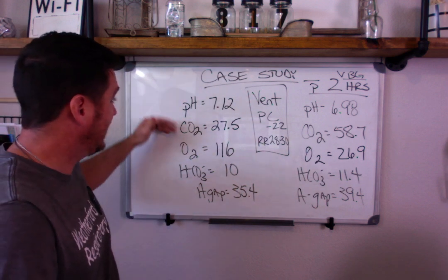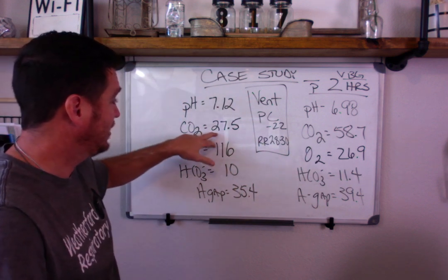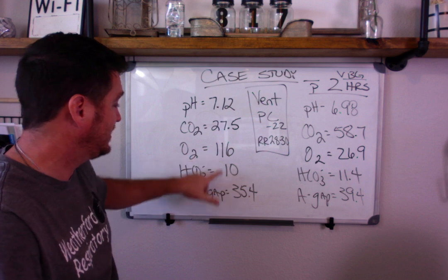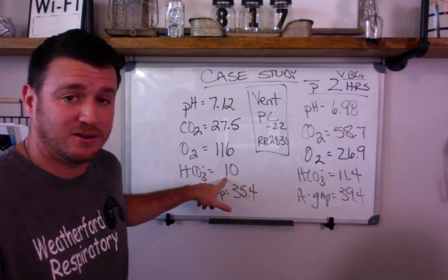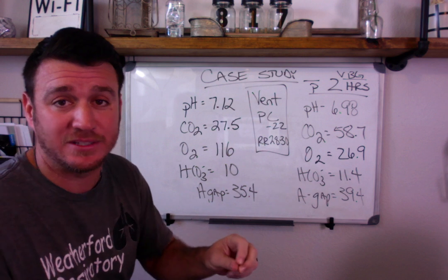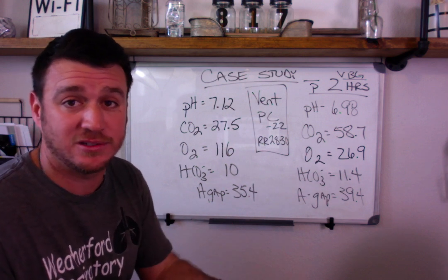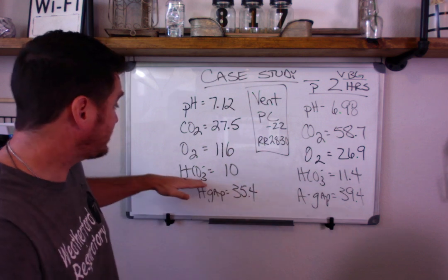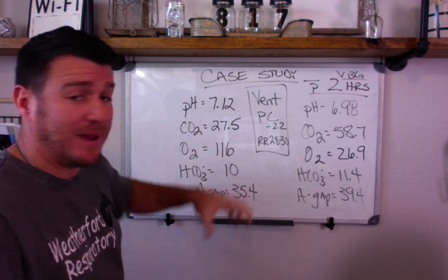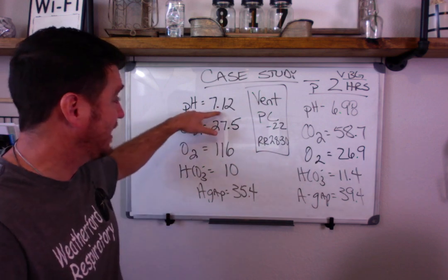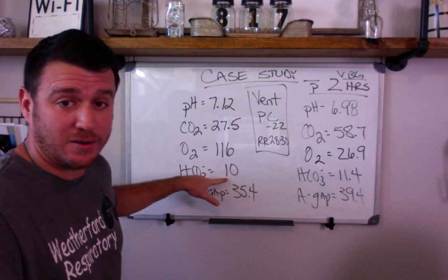Here was our initial blood gas. pH 7.12, CO2 is 27.5, O2 is 116, HCO3 is 10. Now what we know here is that we have a partially compensated metabolic acidosis. We know it's a metabolic acidosis because we have an acidotic pH and a low bicarb.